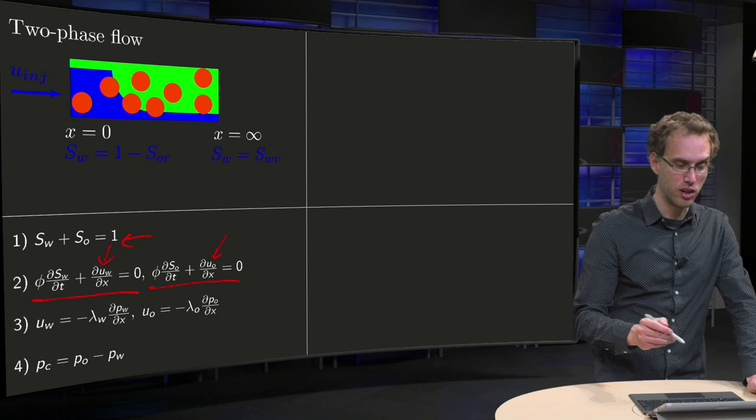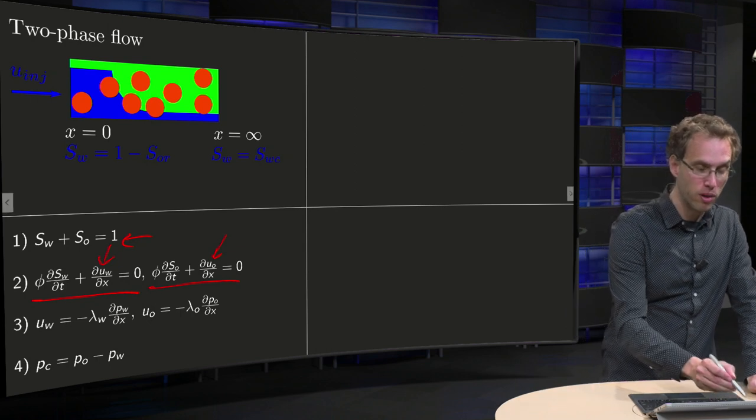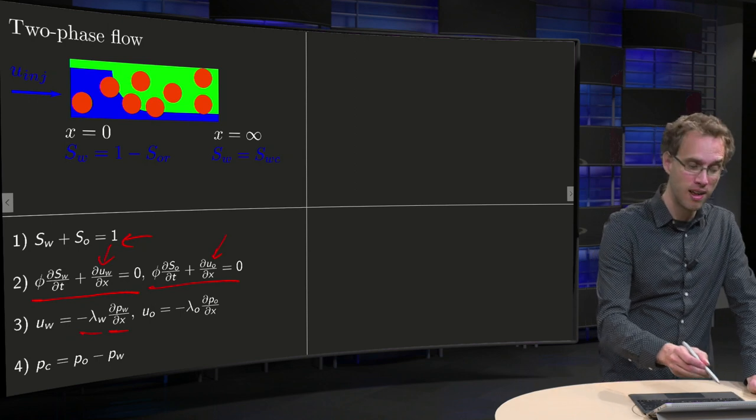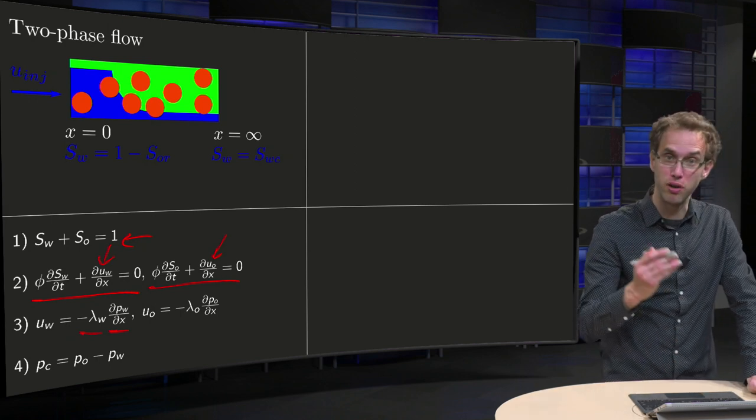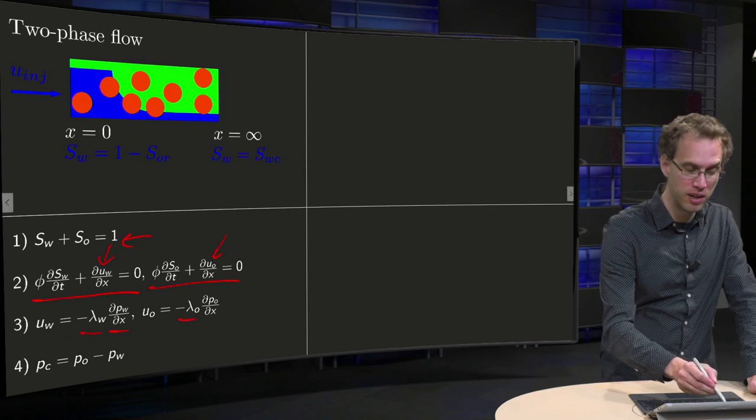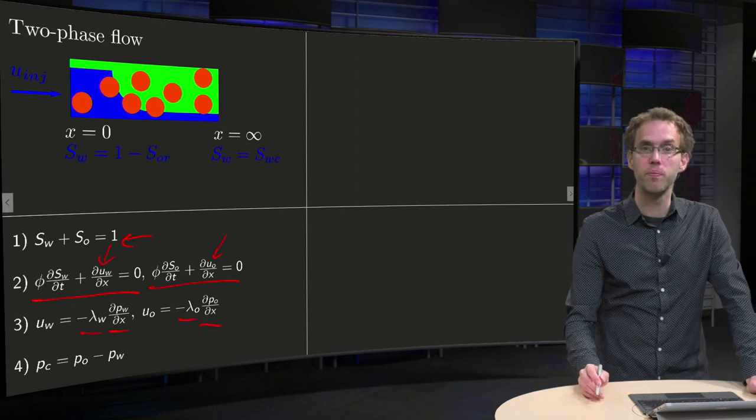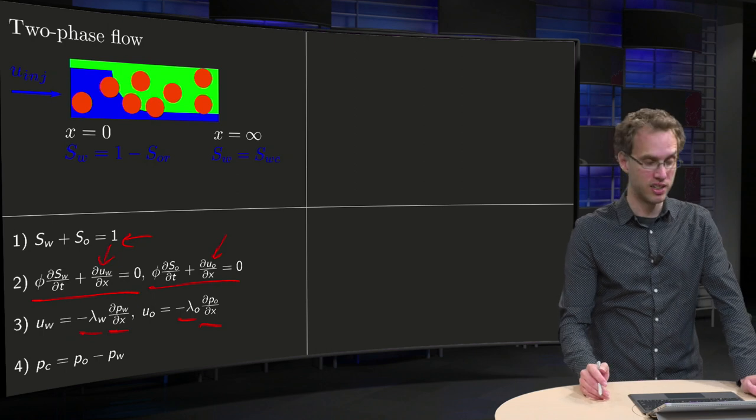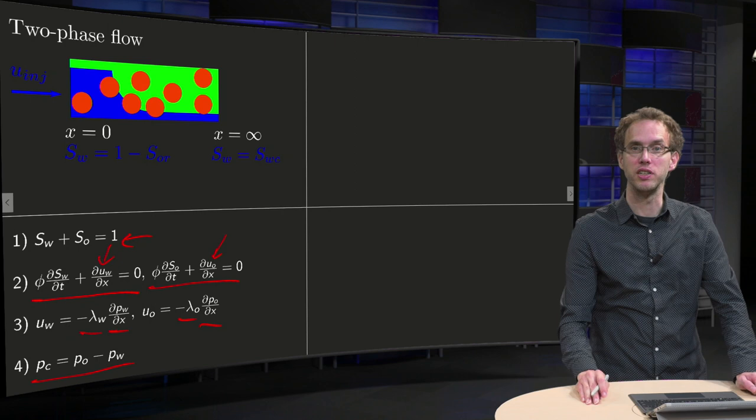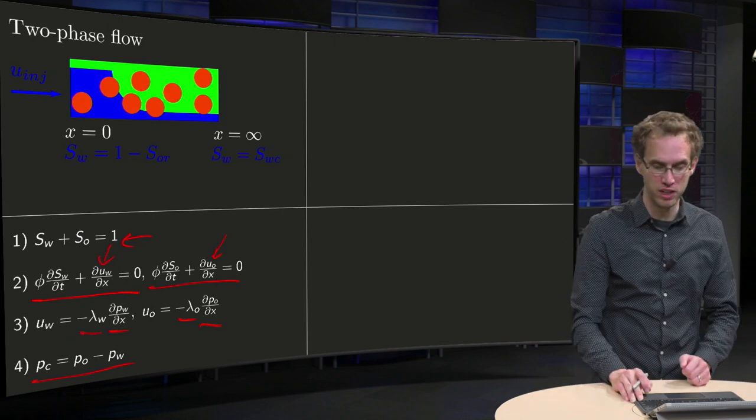Furthermore, we will use Darcy's law. Water velocity is given by its mobility times its pressure gradient. The oil velocity is given by its mobility times the oil pressure gradient. And we will use capillary pressure to model the difference between the oil and water phase.